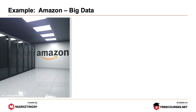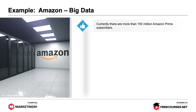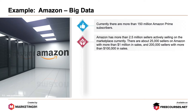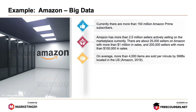Now let's see an example of Amazon and big data. Key facts: currently, there are more than 150 million Amazon Prime subscribers. Amazon has more than 2.5 million sellers actively selling in the marketplace. There are about 25,000 sellers on Amazon with more than $1 million in sales, and around 200,000 sellers with more than $100,000 in sales. On an average, more than 4,000 items are sold per minute by small-medium businesses located in the US.